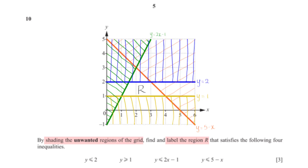For y ≤ 5 minus x, testing the origin gives 0 ≤ 5, which is true, so the region below y = 5 minus x is wanted. We shade the region above y = 5 minus x. After shading all unwanted regions, we are left with a region satisfying all 4 inequalities, which we label R.